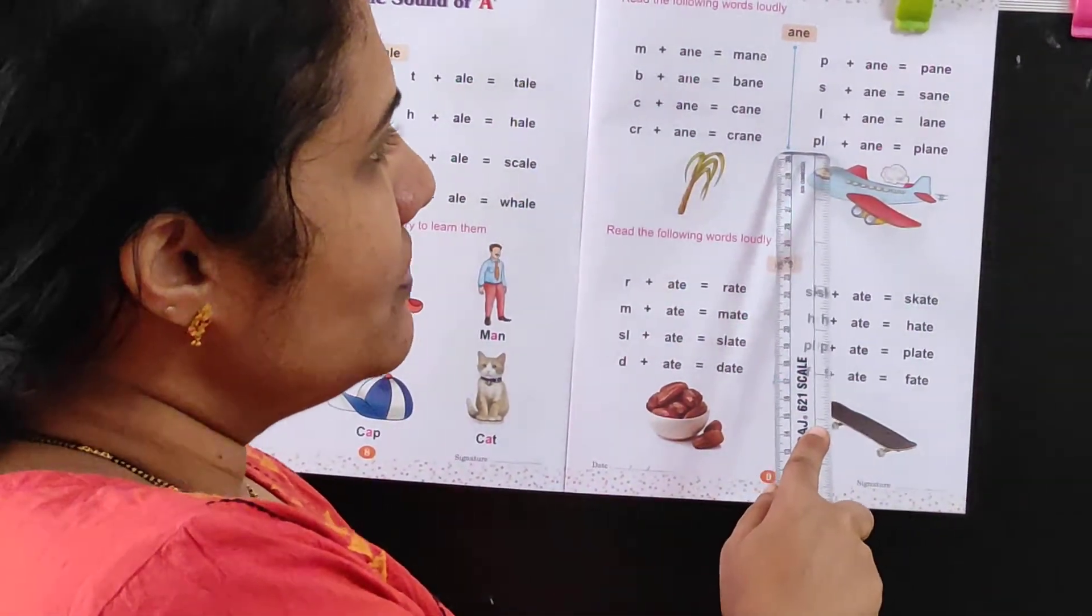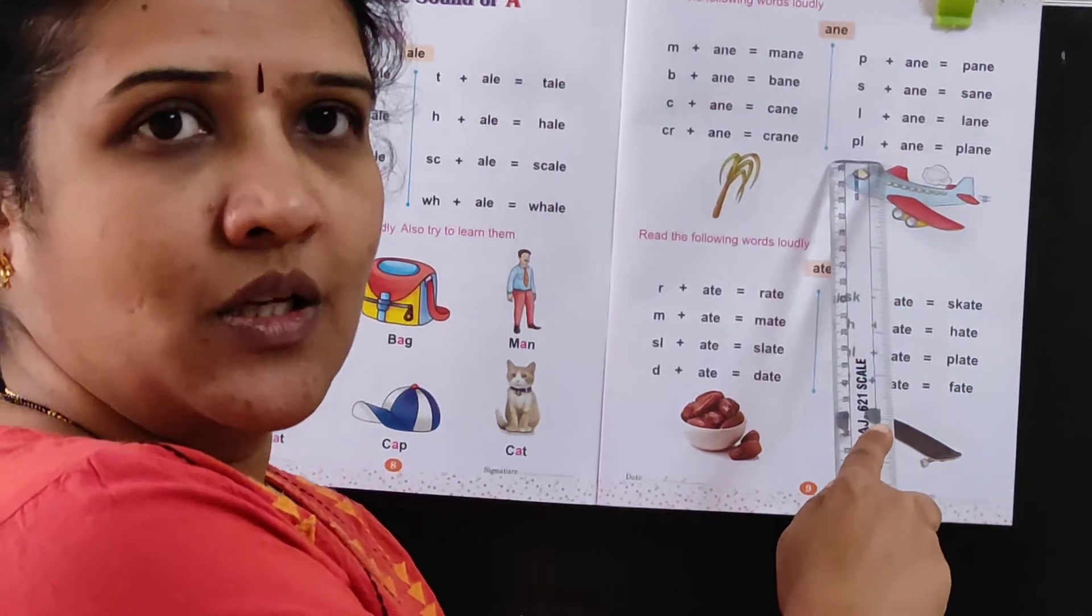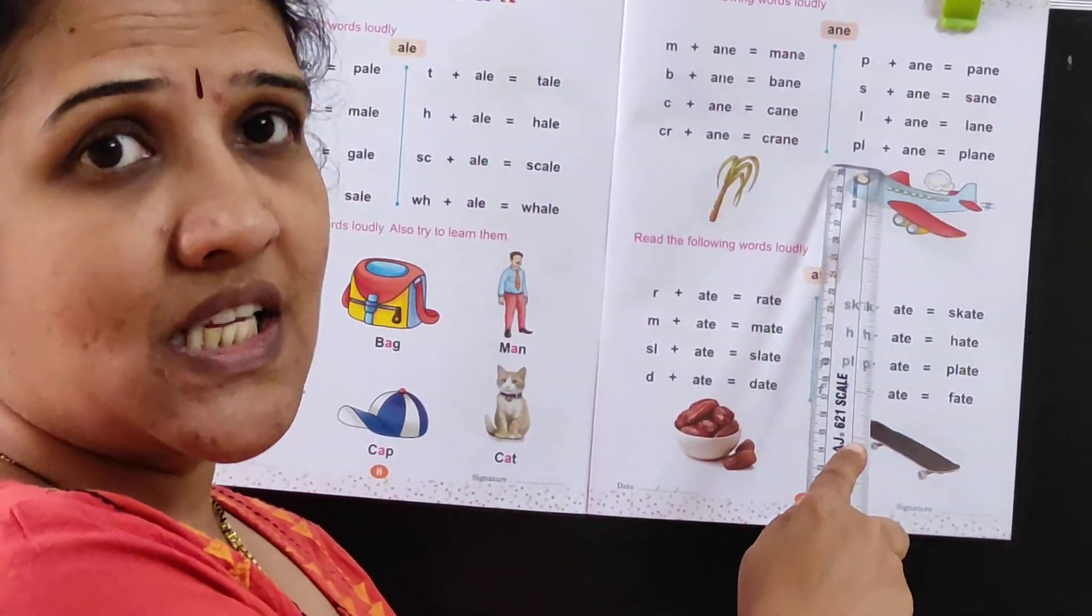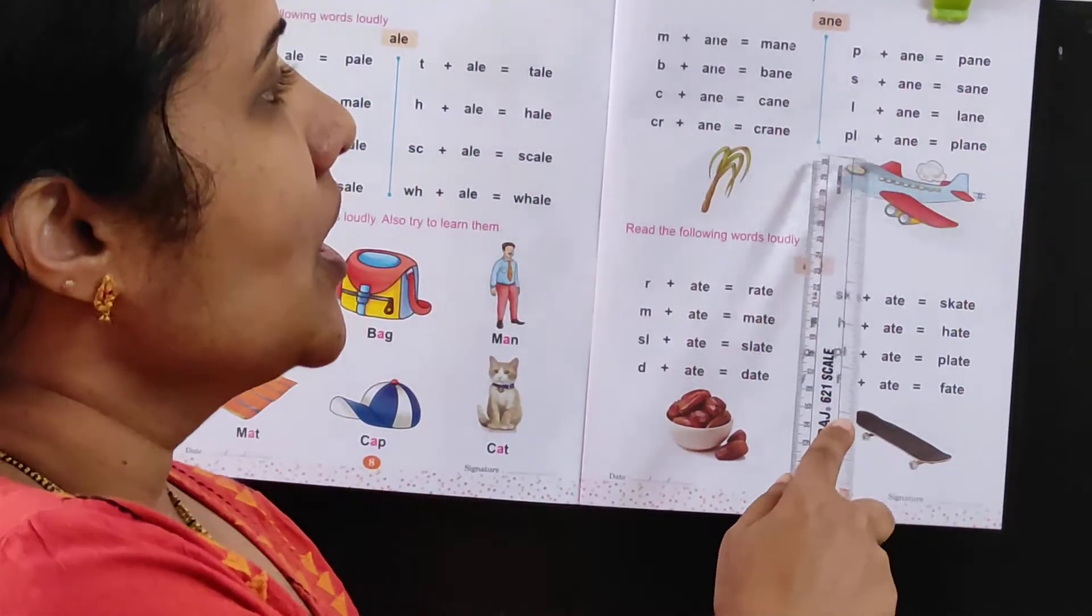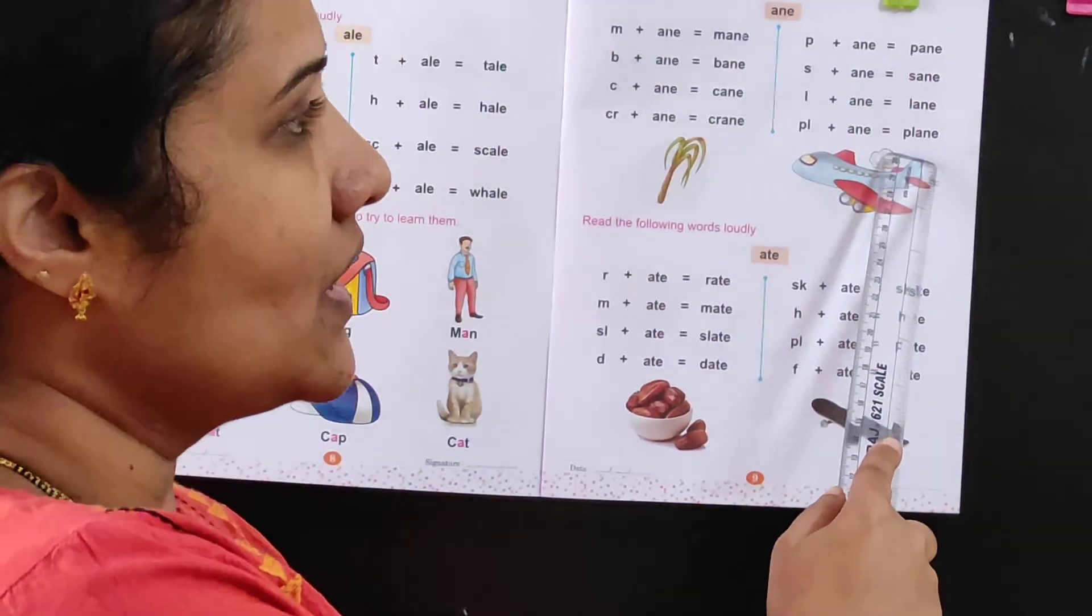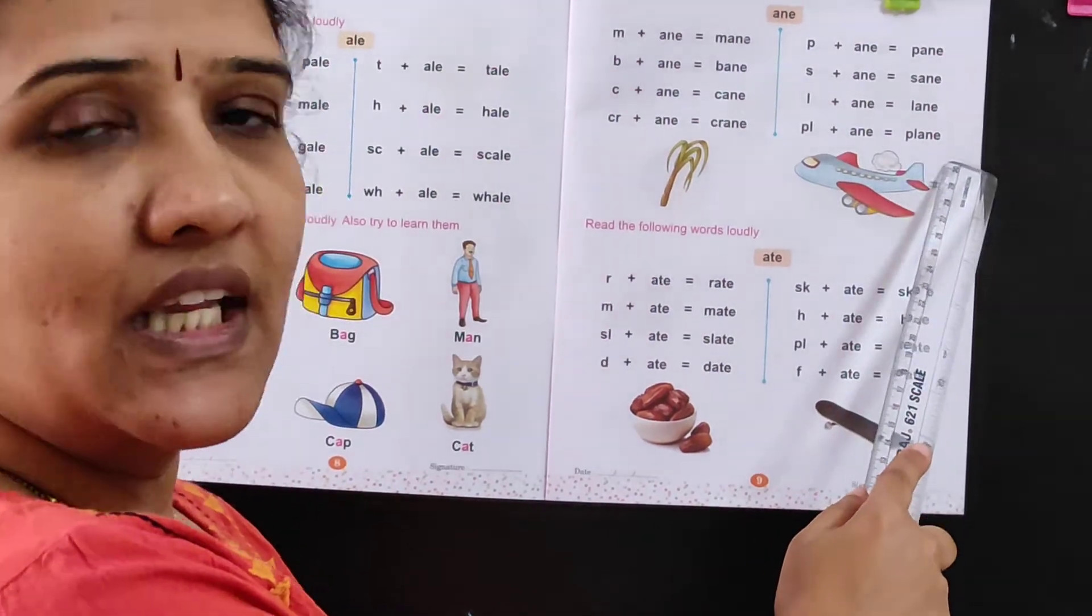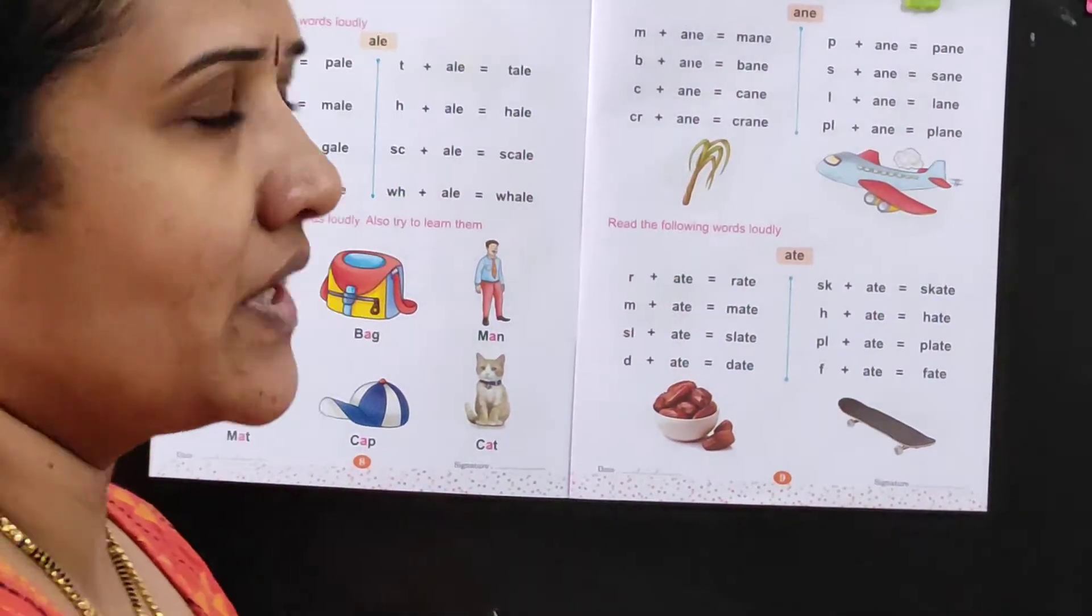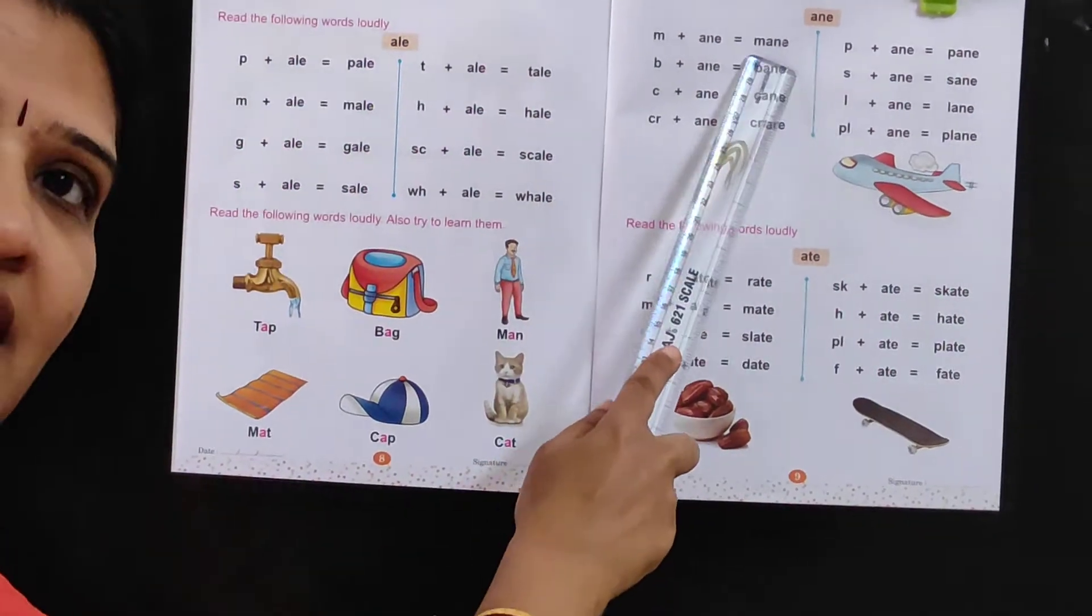Now again over here, you see P-L. When it is P-L, the sound is Plur. Plur plus A-N-E is Plane. P-L-A-N-E, Plane. So these are the A-N-E words.